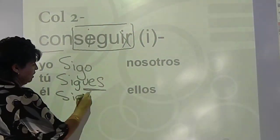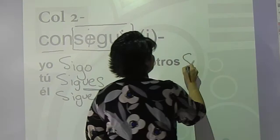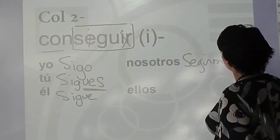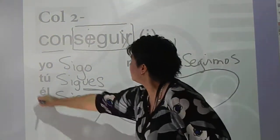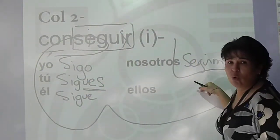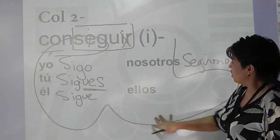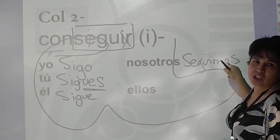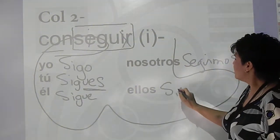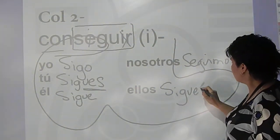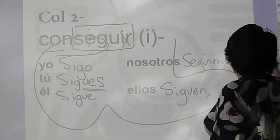So it's siguen and seguimos because remember this is a stem changer, and because it's a stem changer, it only stem changes within the boot. It's not going to stem change here. And siguen. That's the first verb.